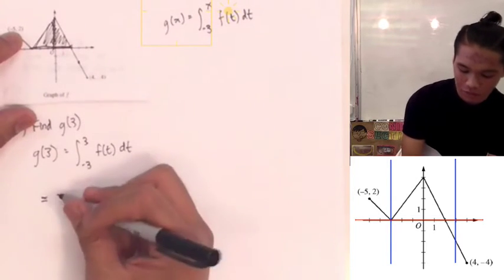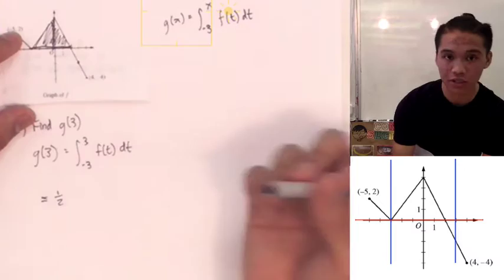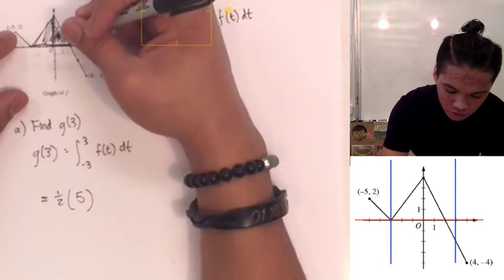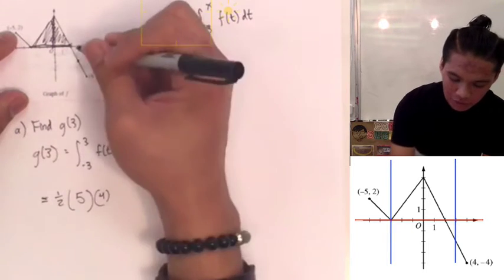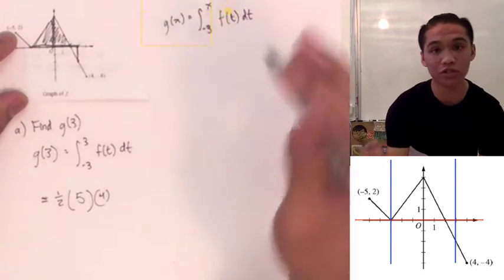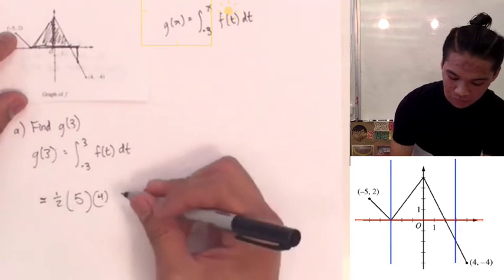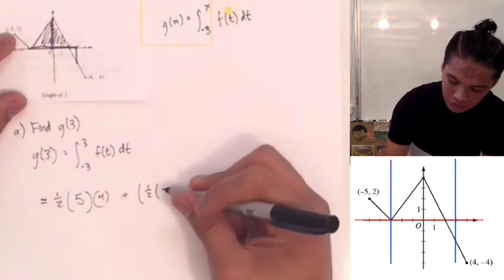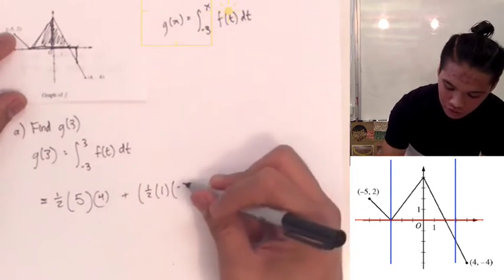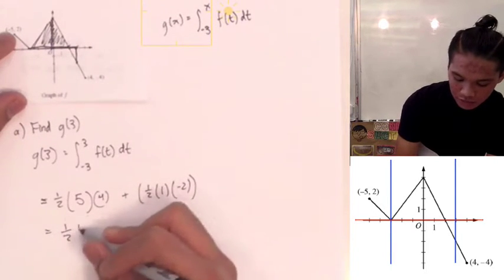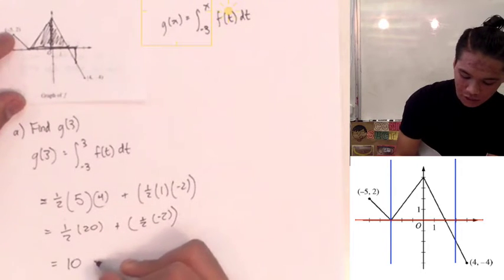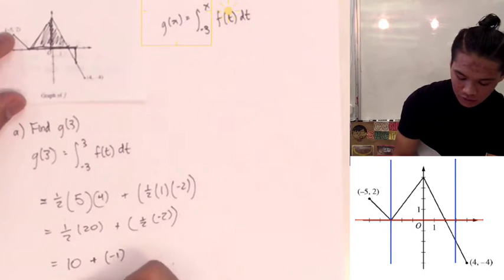This whole triangle is represented by one half — the area of a triangle formula — one half of our base, which is 5 units, times our height, which is 4 units. And then we're going to have to add this triangle down here from x equals 2 to x equals 3. So we add one half times the base, which is 1, and then the height, which is actually negative 2 here. We can further simplify: one half times 20, plus one half times negative 2, giving us 10 plus negative 1, which equals 9.